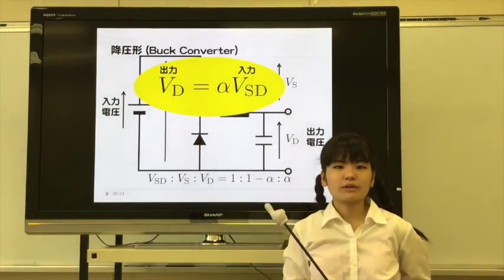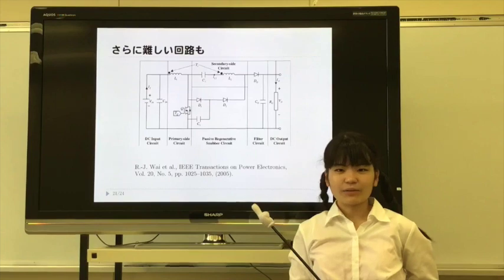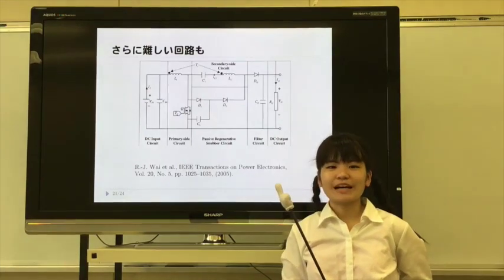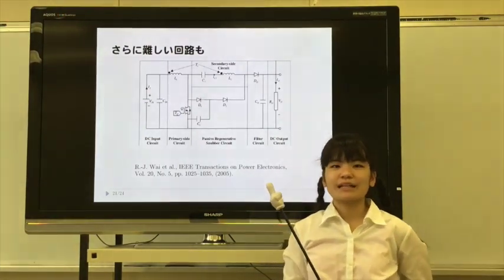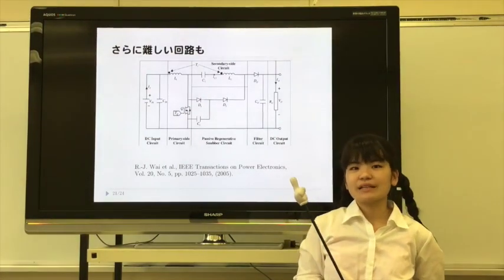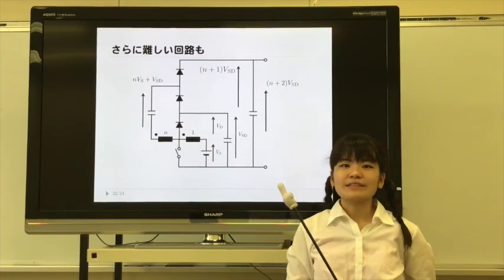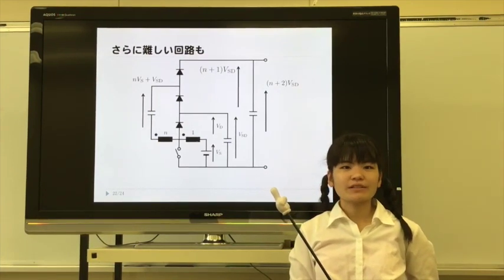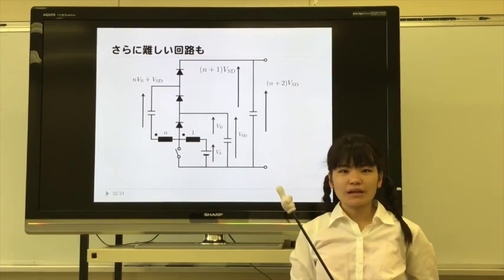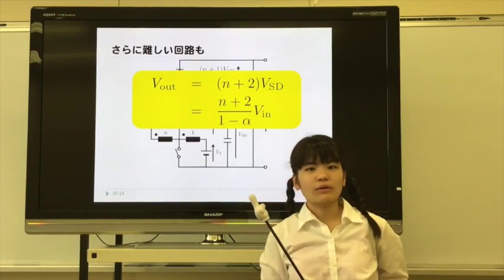In addition, I skipped the detail, but this more difficult circuit can also be redrawn by the common equivalent circuit — it is like this. We can calculate the ratio between the input and output voltages quickly.